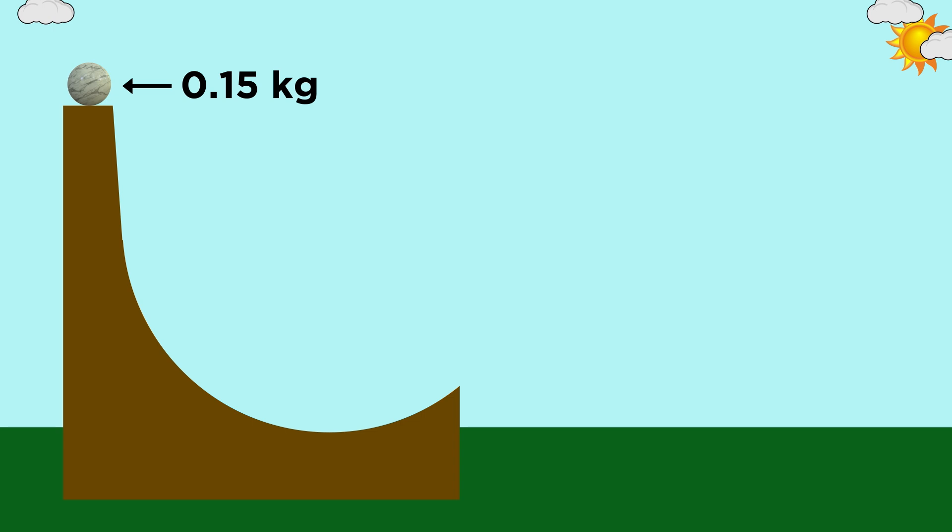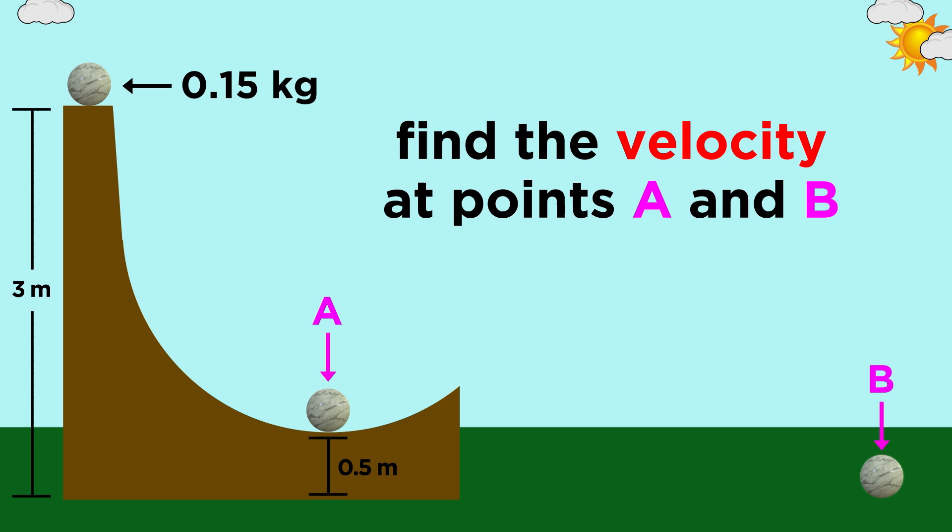If the ball you use has a mass of 0.15 kilograms, and the ramp ranges from three meters off the ground at the top, to half a meter off the ground at the lowest point in the path of the ball, what is the velocity of the ball at the lowest point of the ramp, and when it hits the ground after the jump?